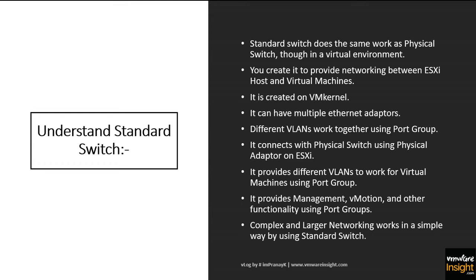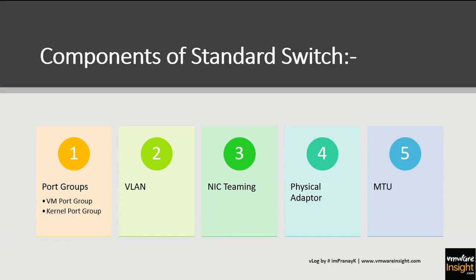The components of a standard switch include: port group, VLAN, NIC teaming, physical adapter, and MTU — we will discuss these in later modules. Within port groups there are two different types: the VM (virtual machine) port group and the VMkernel port group.